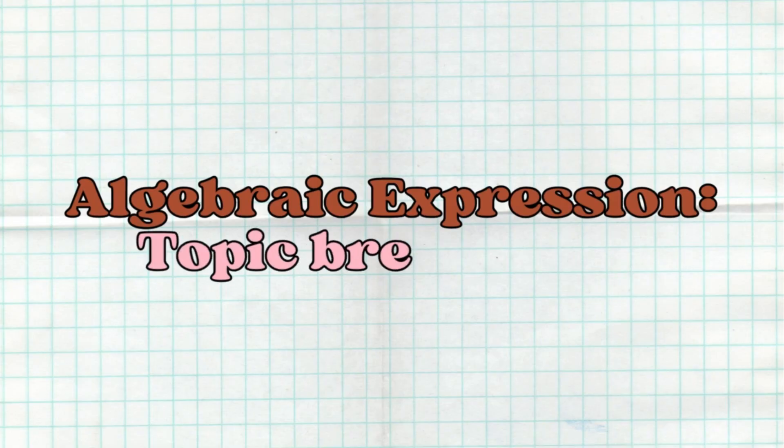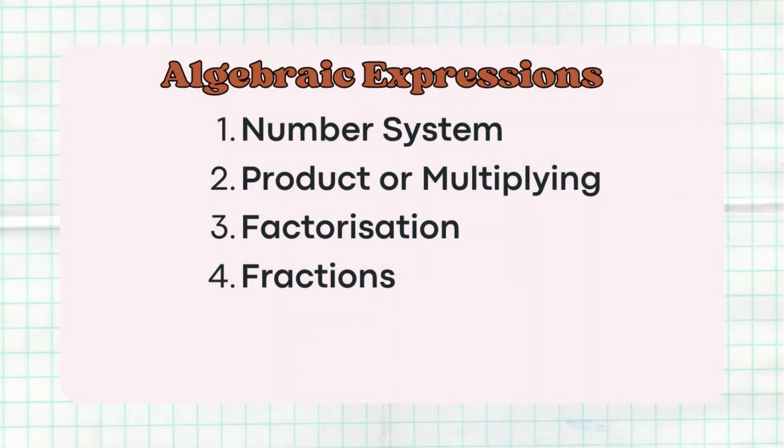We're going to talk about algebraic expressions and break it down into its simple form. Algebraic expression is divided into five parts: number system, products, refactorization, and fractions. What I'm going to do is take each section and break them down into more topics that you can find in each section.